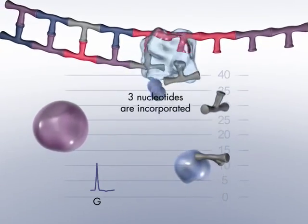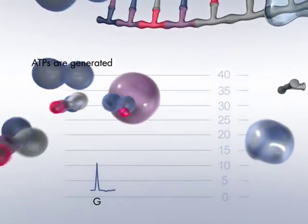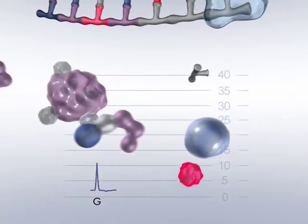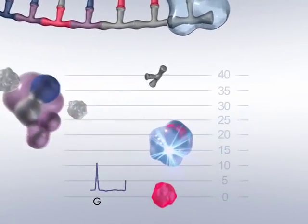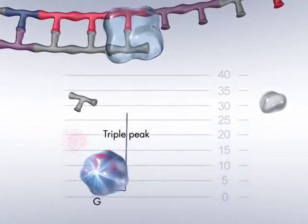When three nucleotides are incorporated by polymerase, three molecules of pyrophosphate are generated. The three pyrophosphate molecules are converted to three ATP molecules, and these power an equimolar oxidation of luciferin. The result is a recorded triple peak.